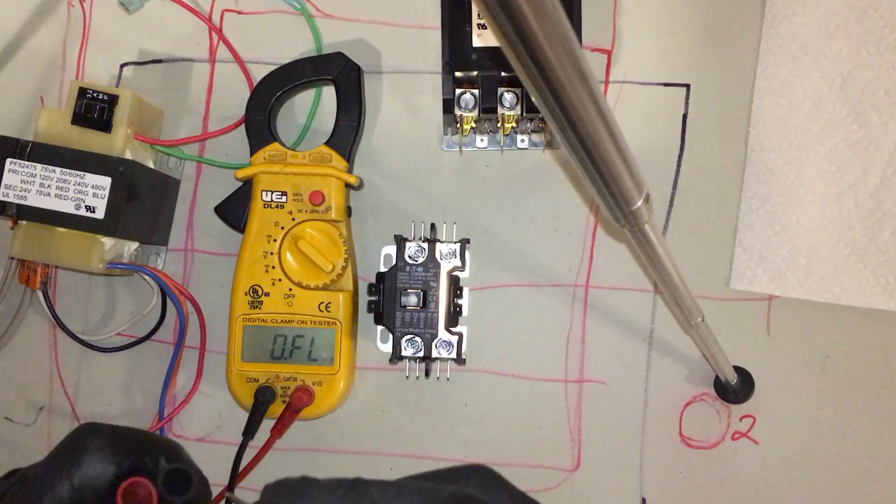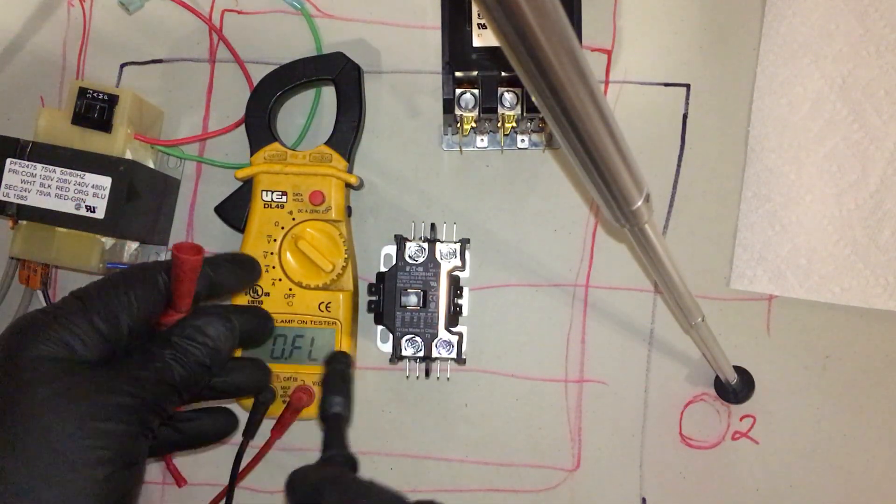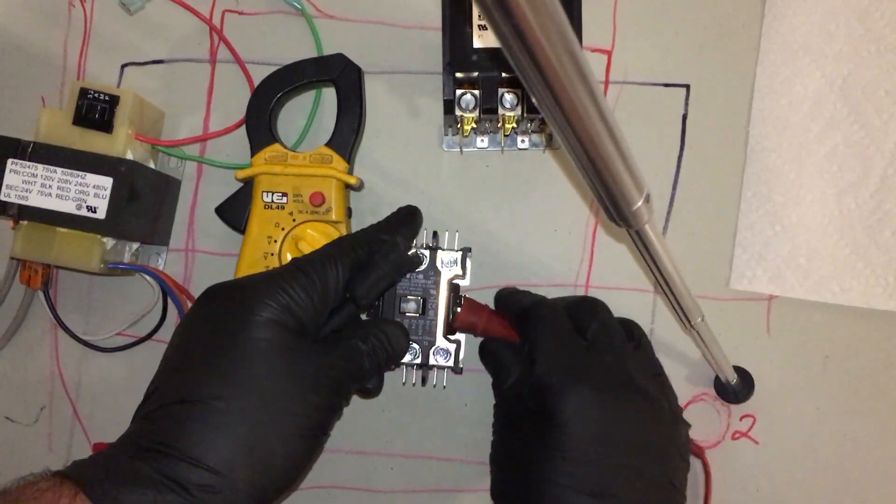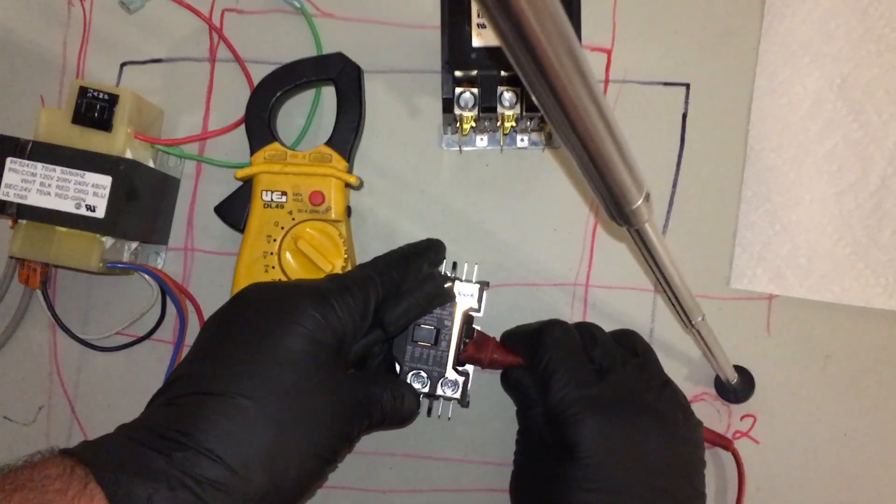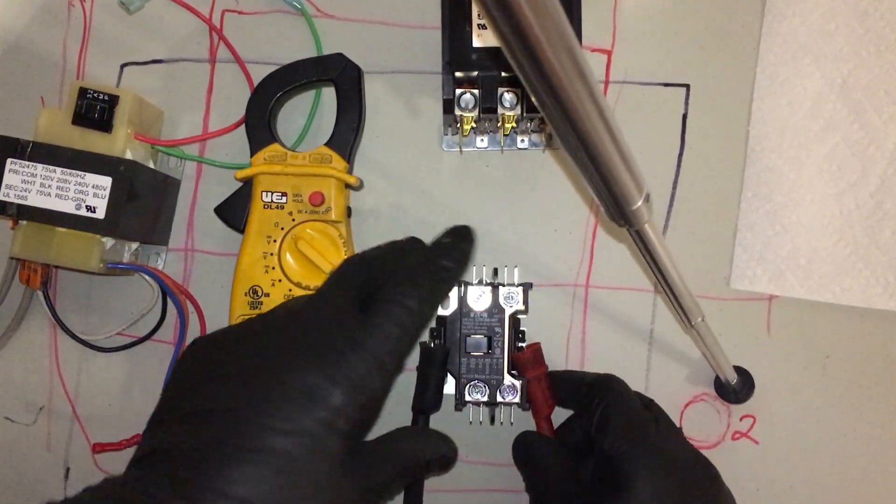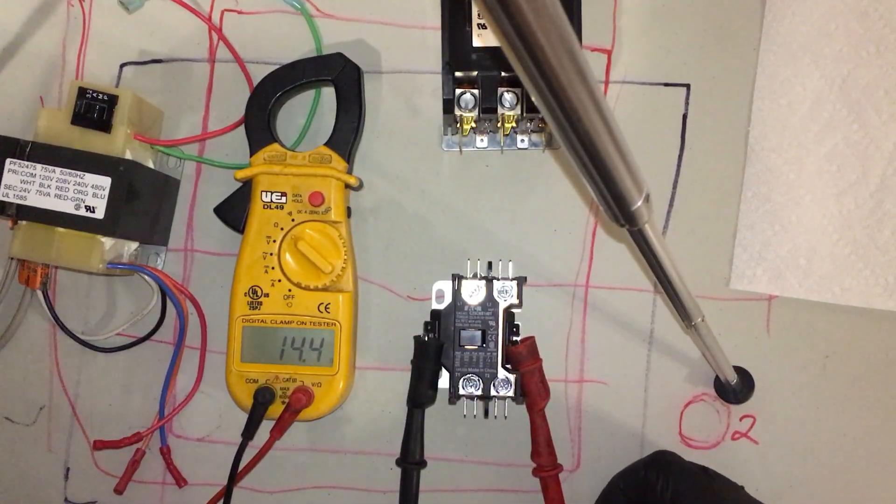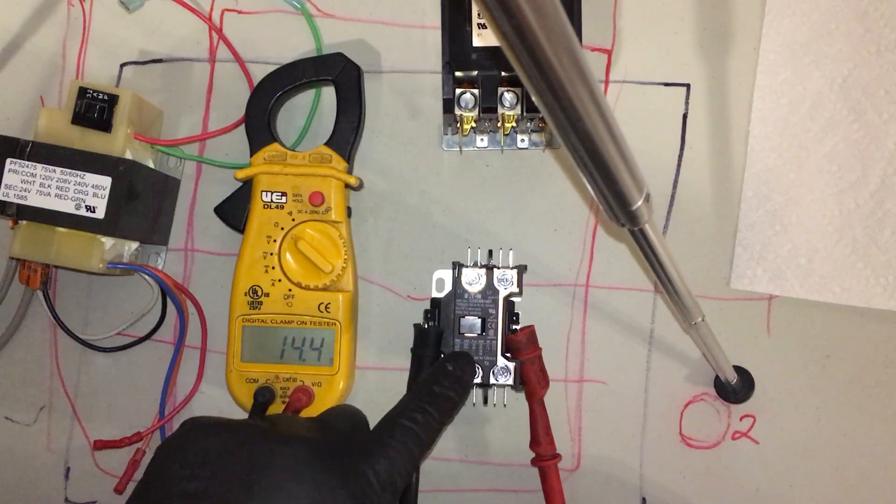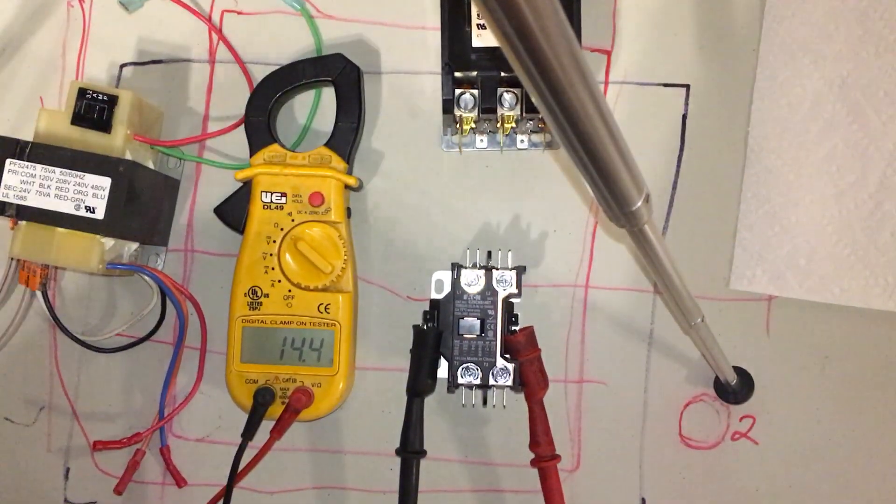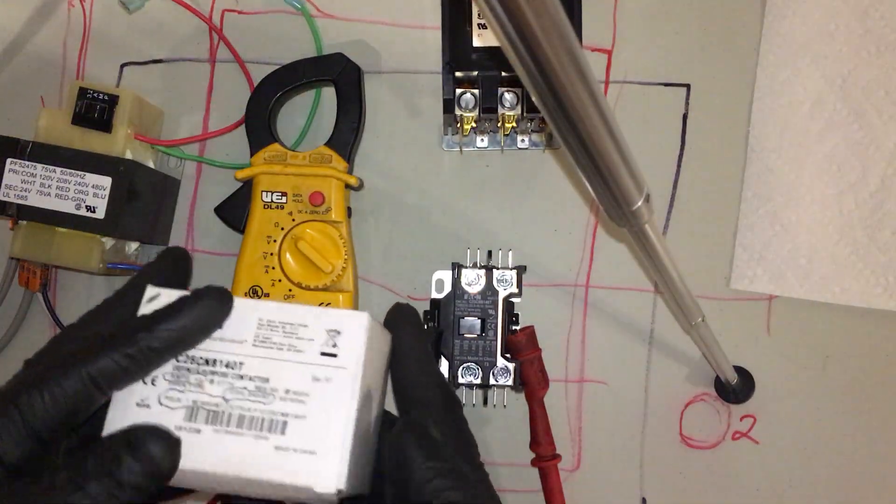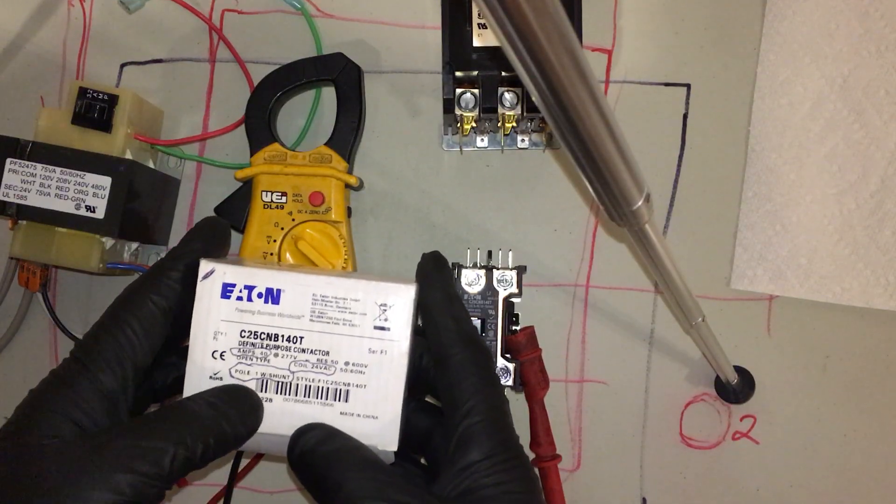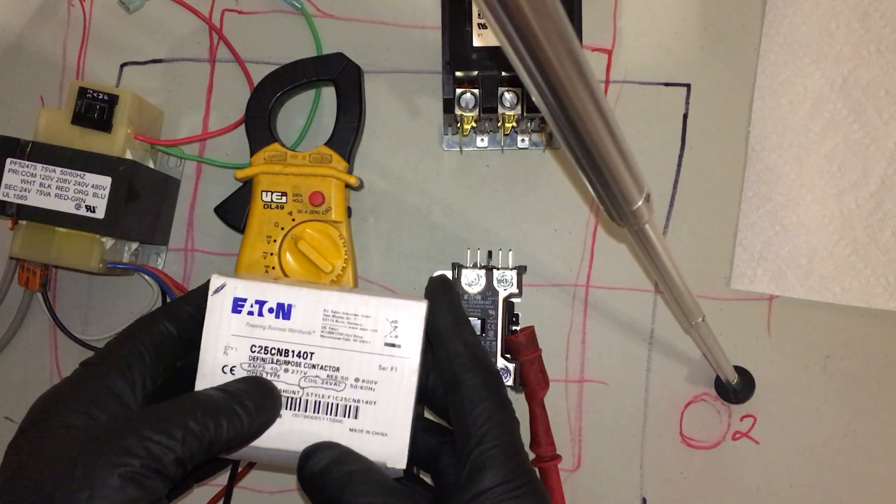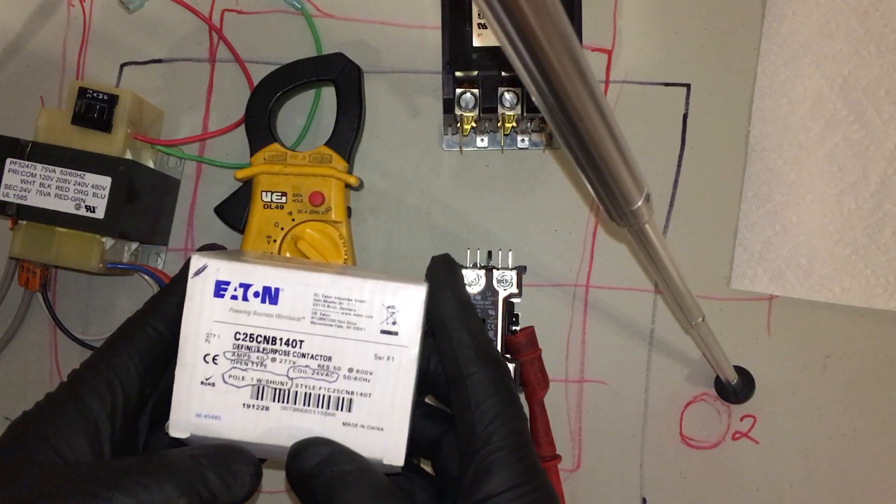Let's ohm out this brand new contactor. Let's hook this up. We get about 14 ohms, so 14 ohms is your standard residential. This is about a 30 amp or a 40 amp contactor. This is an Eaton, these are the ones I get at Johnstone. Good contactor. One pole with a shunt, 24 volt coil, 40 amps. Johnstone number is going to be L45981.